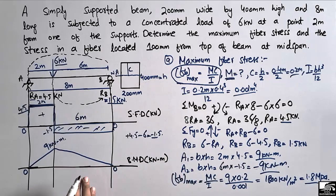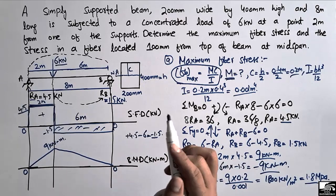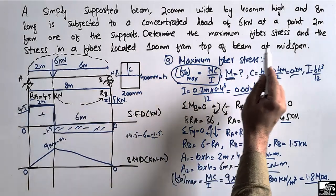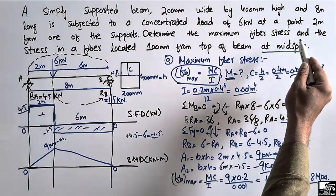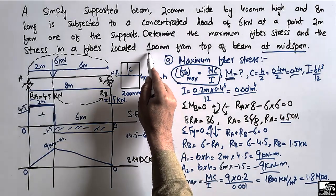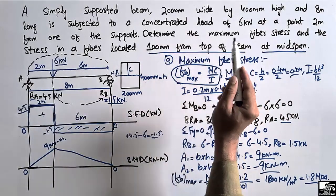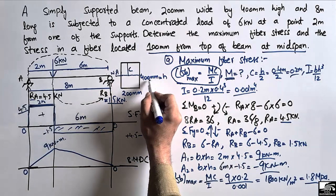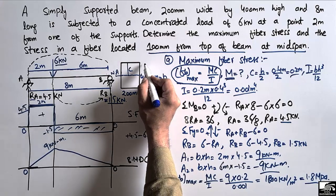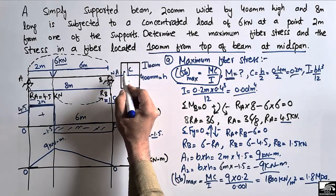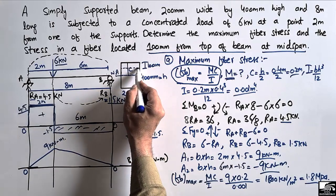Now for the second part: we find the stresses in a fiber located at 100 millimeter from the top of the beam at mid span. The total depth is 400 mm, so 100 mm from the top identifies a specific point within the cross section where we need to find the stress.